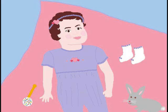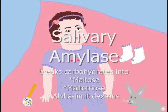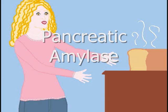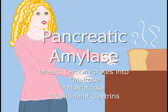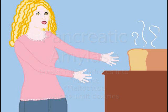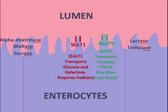Let's start at the very beginning, a very good place to start. When you eat carbohydrate, salivary amylase will break it down. Then pancreatic amylase breaks it down to maltose and maltotriose and alpha-limit dextrins, which along with other di- and trisaccharides get broken down by enzymes on the intestinal wall that end with -ase into glucose, galactose, and fructose.